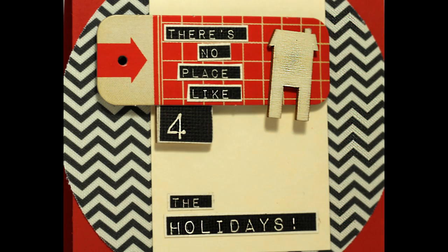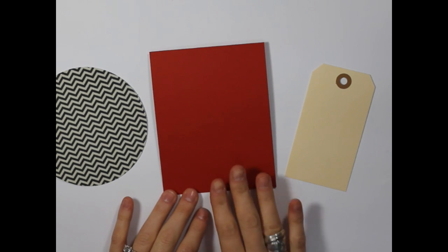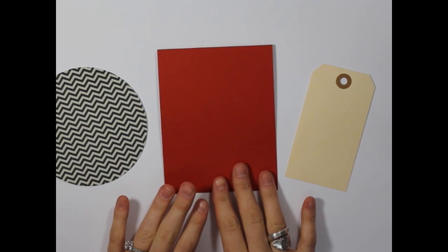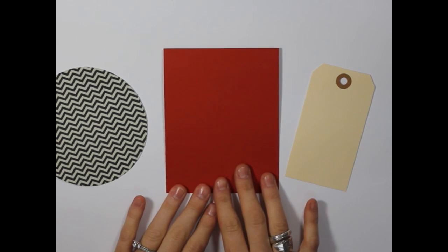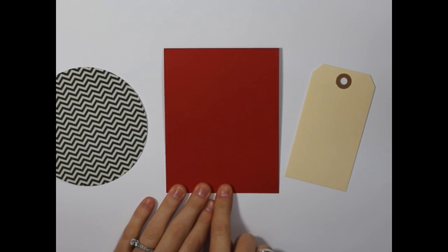Hi, this is Julie Campbell with Two Peas and a Bucket, and today I have another Finley Friday card tutorial for you. We'll be making a holiday card and I have a few basic supplies. I went ahead and made an A2 size card base, which is four and a quarter inch wide by five and a half inches long.